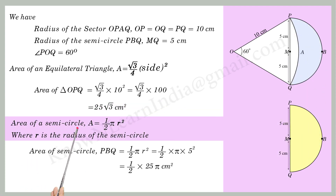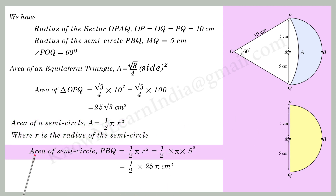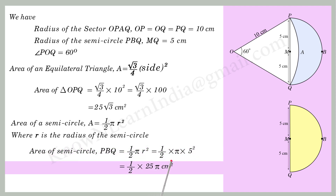The area of a semi-circle A is equal to half pi r squared, where r is the radius of the semi-circle. So the area of semi-circle Pbq is equal to half pi r squared, which equals half into pi into 5 squared, which equals half into 25 pi cm².